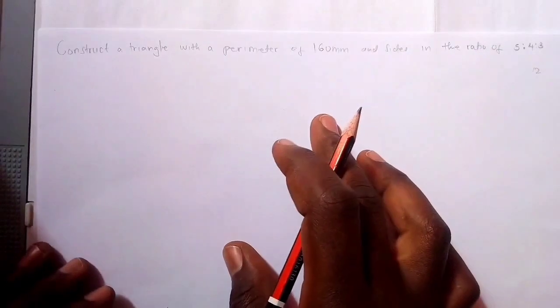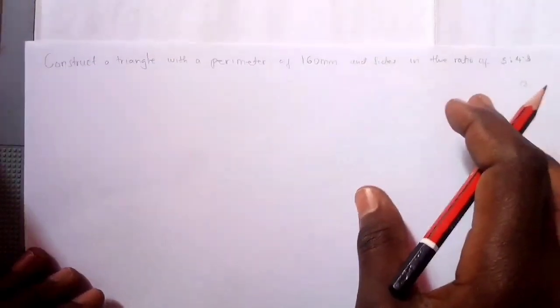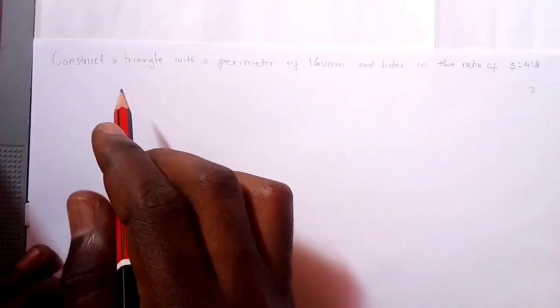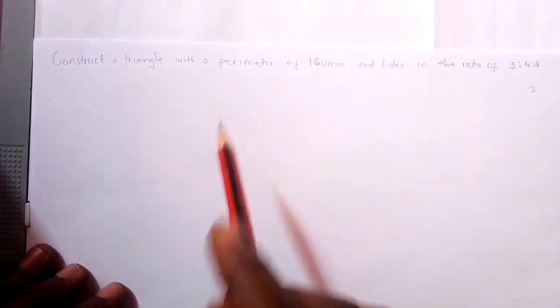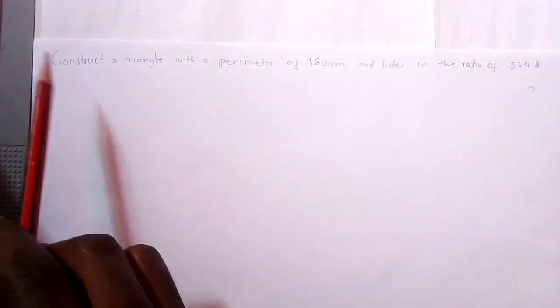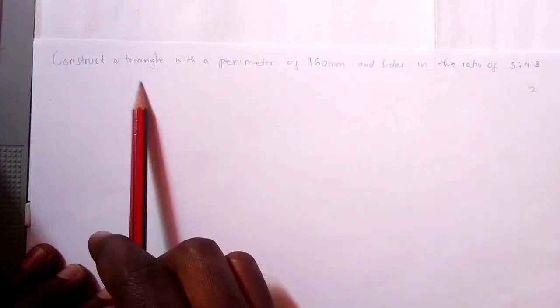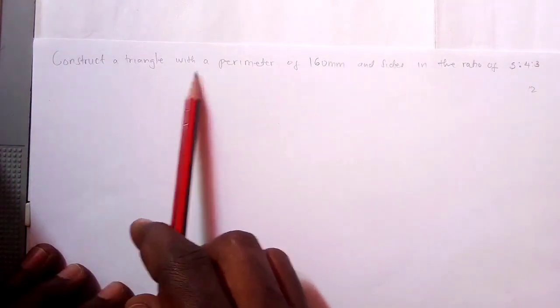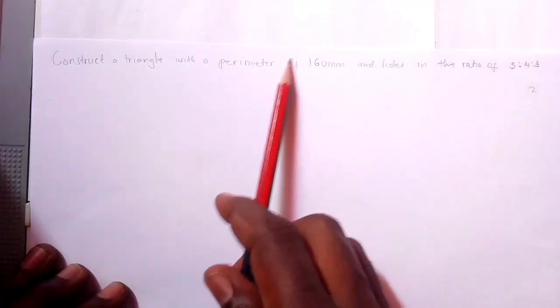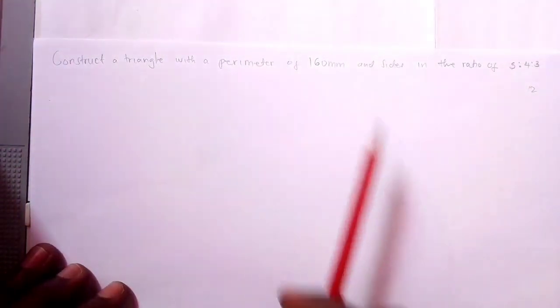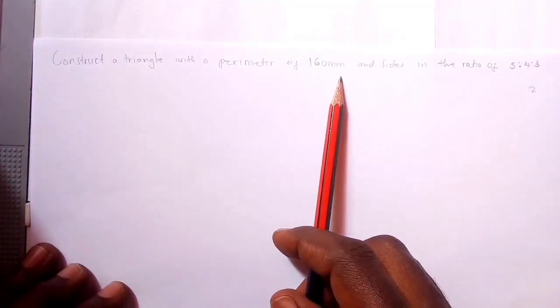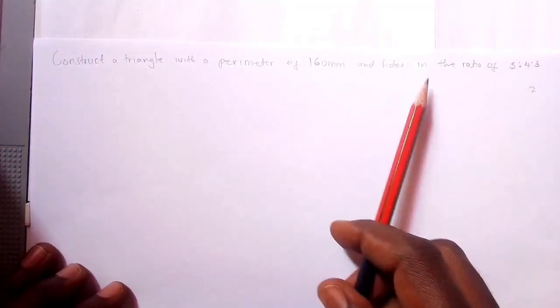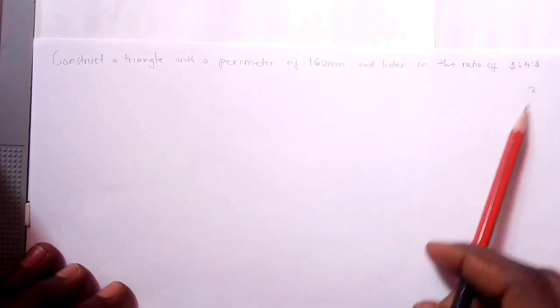Hello guys, I hope you're fine. We are here for solving this problem, which says: construct a triangle with a perimeter of 160mm and sides in the ratio of 5 to 4 to 3.